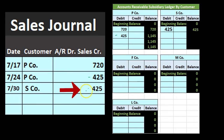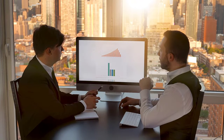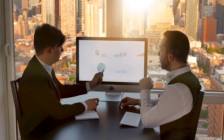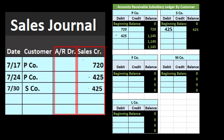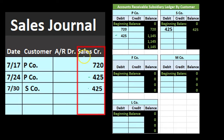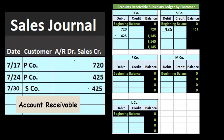Note that if anything is different than a sale on account — anything other than just debiting accounts receivable and crediting sales — it will not go in the sales journal. The most common case people might think would go here is a sale made for cash because that would involve sales, but it's not a sale on account, therefore it does not go into the sales journal. The sales journal really is an accounts receivable type journal — a sales on account type journal.